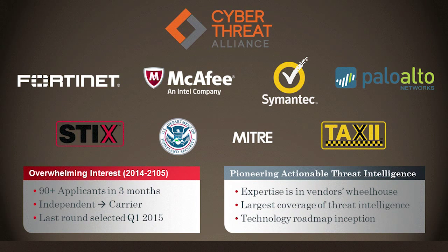The Cyber Threat Alliance was founded at the end of 2013, and from 2014 to 2015 it's been growing at a significant rate. Originally it started with four founding members: Fortinet, McAfee (now Intel Security), Symantec, and Palo Alto Networks. Traditionally we were all competitors in the security vendor space, and the idea was to get together and pool our threat intelligence teams — our great researchers from all these companies. We all see different aspects of the cyber underground or the adversary space from around the world at different levels of the security stack.